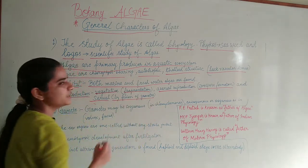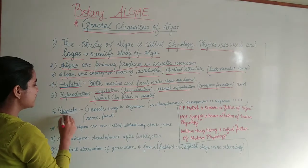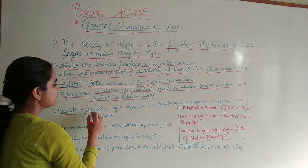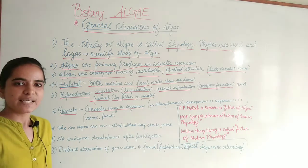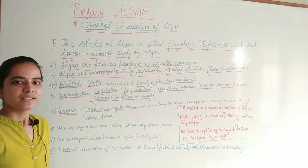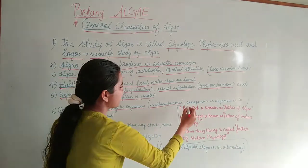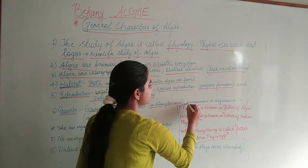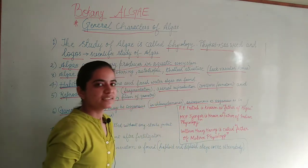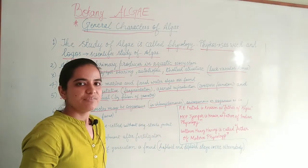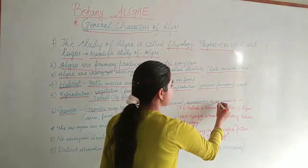All three types of reproduction are found in algae. Gametes may be isogamous — when the morphology of gametes is the same, as seen in Chlamydomonas. Anisogamous — when the morphology of gametes is different. And oogamous — when the male gamete is motile and small, and the female gamete is large and stationary.